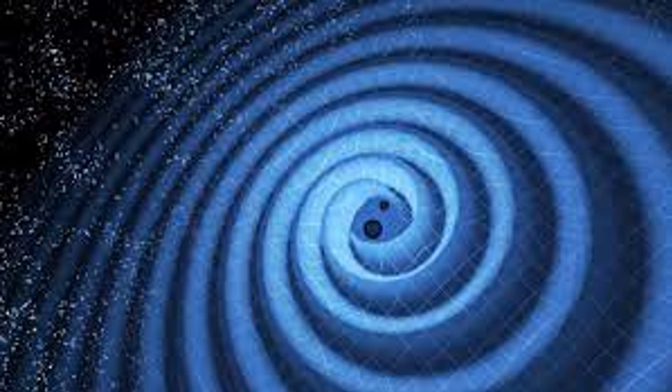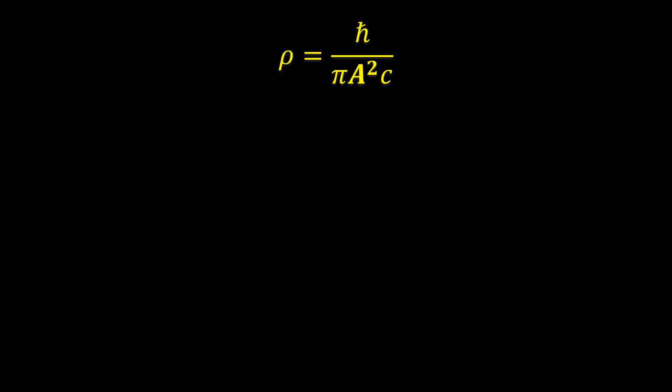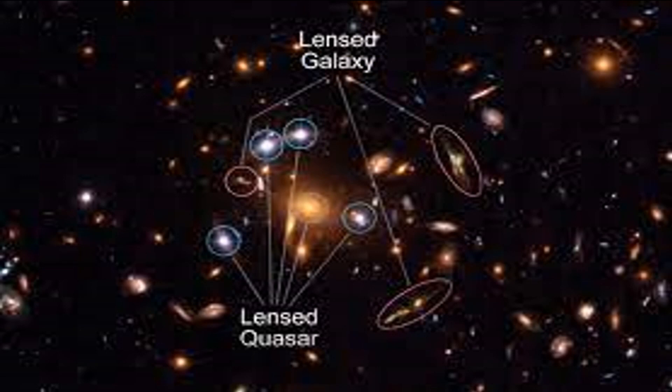Free space could be dark matter, and I have just shown you that it has a density, and I have also calculated the value of that density. If my model of waves had been used since the beginning of classical physics, we wouldn't have had to wait until we were unable to explain astronomical observations such as gravitational effects to infer the existence of dark matter, or the idea that empty space has mass. This comes naturally in my model.